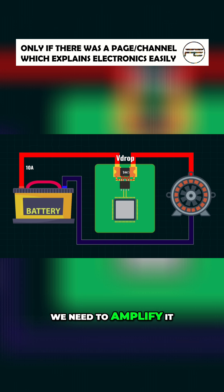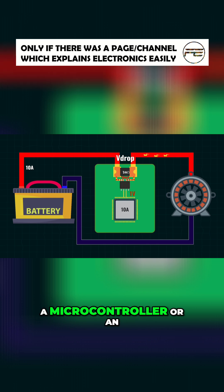So we need to amplify it. That's where a current sense amplifier comes in, and it boosts the small voltage signal so it can be read accurately by a microcontroller or an analog to digital converter. And that's how we know the current.